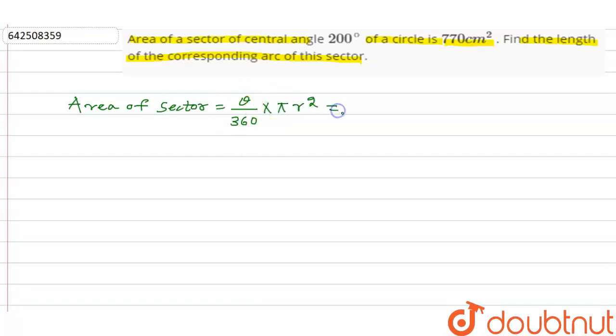It is given in the question, the area of the sector is 770 centimeter square. Now, angle subtended by the arc is given, this is equal to 200, so 200 upon 360 into 22 by 7 r square is equal to 770 centimeter square.